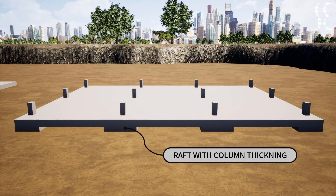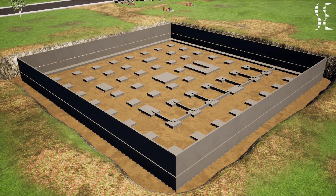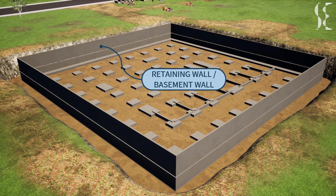Next we will see the retaining wall or basement wall. They are provided to retain soil from one side and may or may not have columns resting above or embedded in them. The retaining wall or basement wall may have a strip footing which may or may not be eccentric as per the property limits. Such walls are also used for water tanks below the ground.